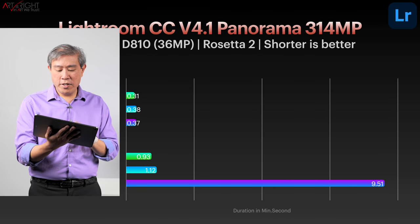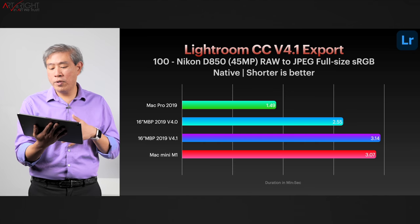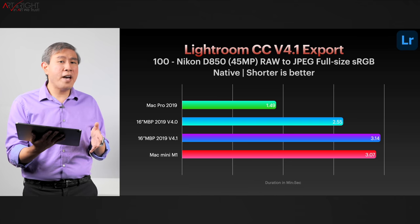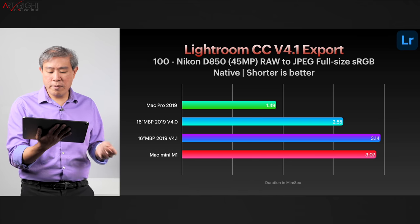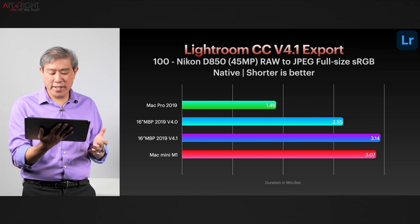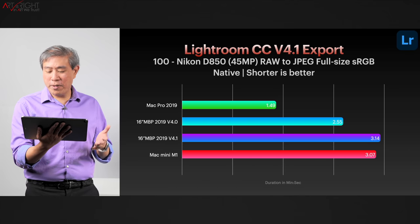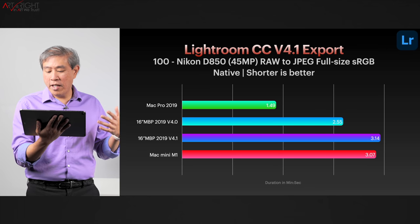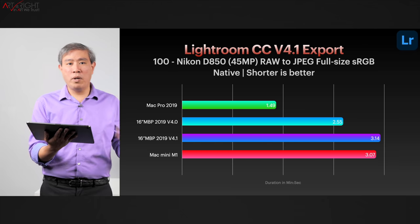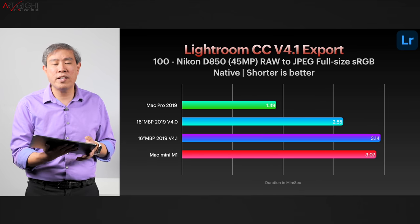One more test: exporting 100 Nikon D850 RAW files to full-size JPEG sRGB. Shorter is better. Lightroom CC is actually slightly faster than Lightroom Classic on export. Mac Pro took 1 minute 49 seconds; MacBook Pro on version 4 took 2 minutes 55 seconds, and version 4.1 took slightly longer at 3 minutes 14 seconds. The Mac Mini came in at 3 minutes 7 seconds — not quite edging out the Intel yet. This process pushes the CPU cores and memory fairly intensively.